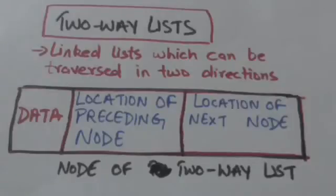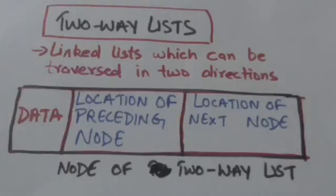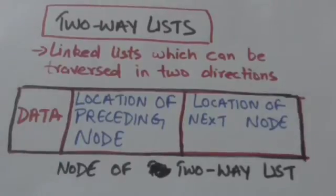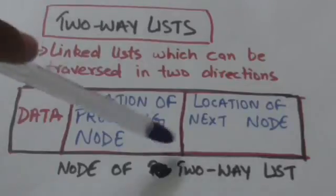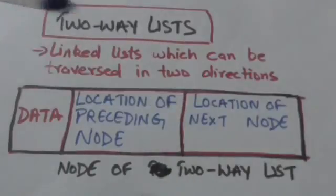Hello friends, welcome back. In this tutorial we will study about two-way lists. Linked lists which we have discussed till now were all one-way lists because they can be traversed only in one direction, that is in forward direction from beginning to the end. A two-way list is a linked list in which each node is divided into three parts: one part contains the data, one part contains the location of the next node in the list, and this part of the last node contains a null pointer.